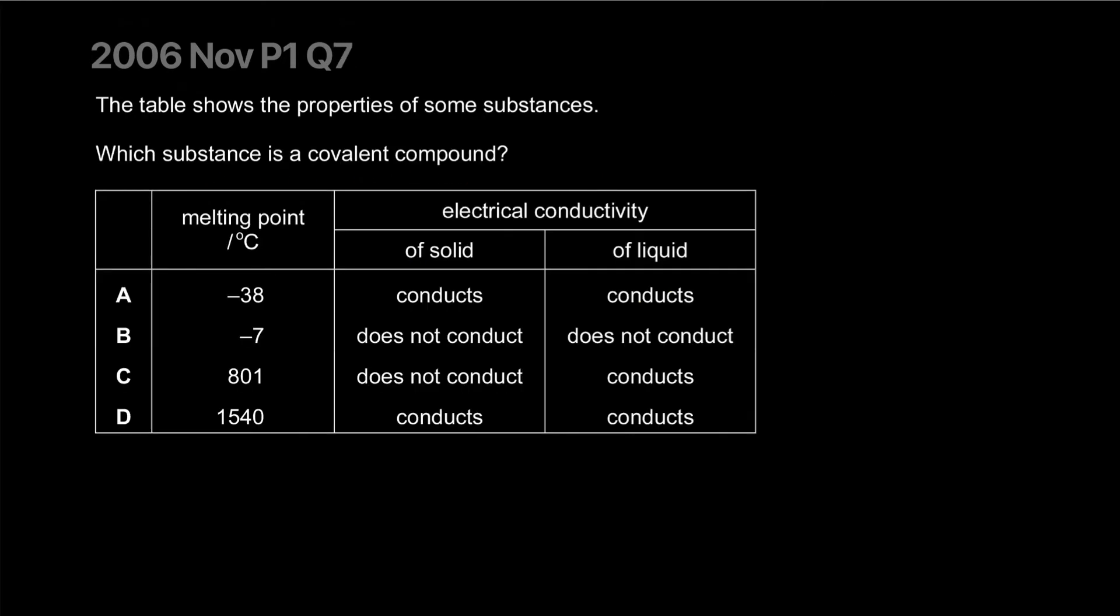Which substance is a covalent compound? So it shouldn't conduct electricity at all. Does not conduct as a solid, does not conduct. I think we're done. Covalent compounds will not - wait a minute. Yeah, it won't. I was thinking of diamond but that's a giant covalent, not this. So B is our answer.